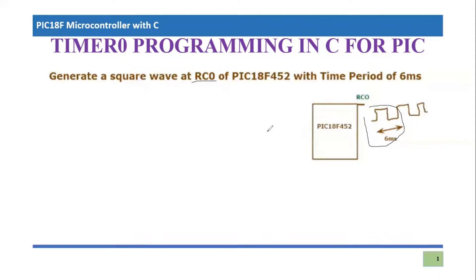First of all, I'm going to write a simple C language program. I have already written it for you, so I will just write it out — because by now you can easily write code to turn on and turn off any pin in C language. Then we will deal with the delay amount needed between turning on and turning off that pin, pin RC0.